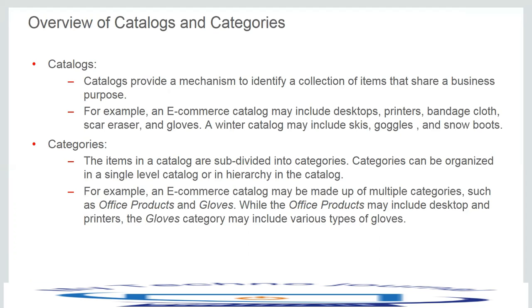What is a category? Instead of grouping all items in one specific catalog together, we can make use of categories, which basically help subdivide the catalog. Under the e-commerce catalog, for example, we could create multiple categories such as office products, men's fashion, healthcare, gloves, etc. We can also create categories just for hierarchical purposes — they can be constructed just to create a hierarchy for easy navigation. We do not have to necessarily add an item under a category.